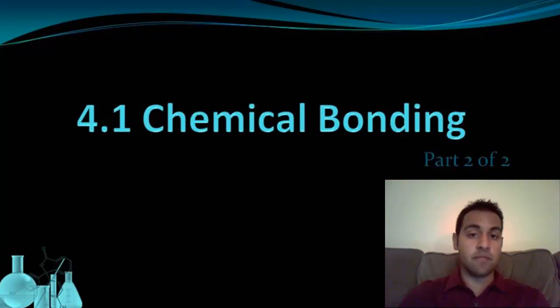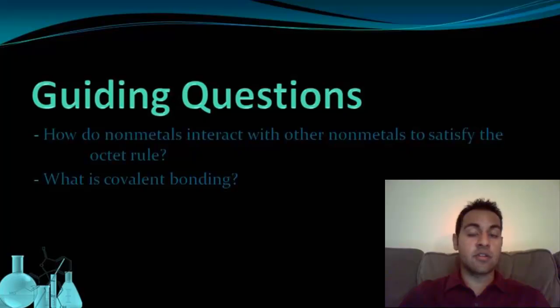Welcome to Part 2 of Chemical Bonding. In the previous video, we looked at the ionic bonding that occurs between a metal and a nonmetal. In this video, we're going to look at the situation that arises between two nonmetals.